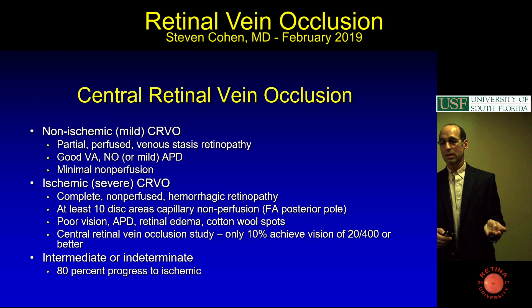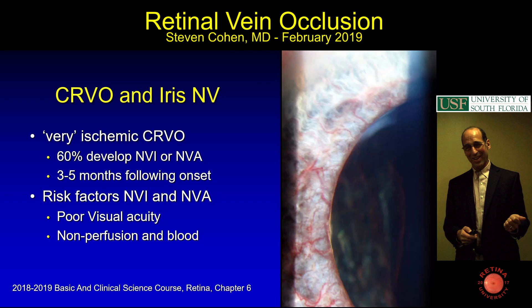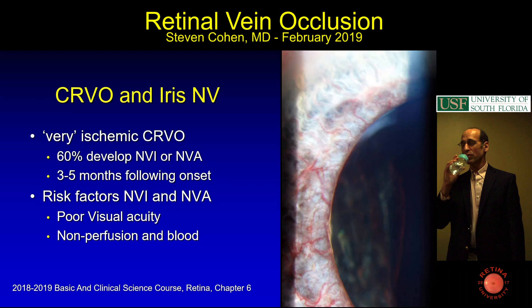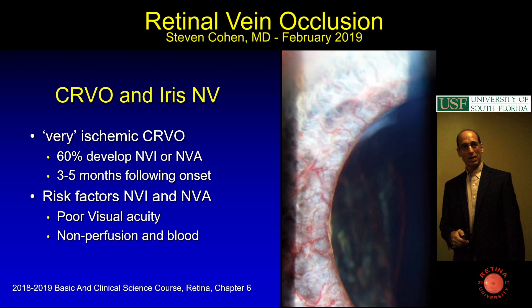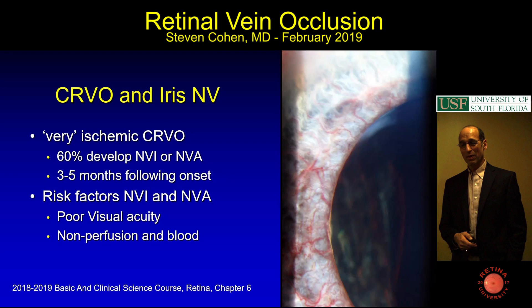Ischemic CVO patients will sometimes have cotton wool spots. Ischemic central vein occlusion: only 10% achieved 20/400 or better, whereas non-ischemic do pretty well—big difference. Some will convert; if they're in between, they mostly convert to ischemic. A very ischemic central vein occlusion has about a 60% chance of neovascularization, usually within three to five months of onset. Poor visual acuity and non-perfusion are risk factors for neovascularization.